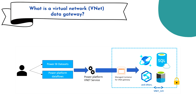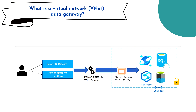Let's start with a very basic question: what is a virtual network data gateway, or VNet data gateway? The VNet data gateway helps you connect from Microsoft cloud services to your Azure data services within a VNet without the need of an on-premise data gateway. It securely communicates with data sources, executes your queries, and transmits results back to the service.